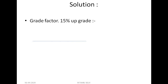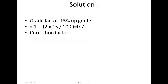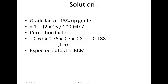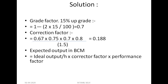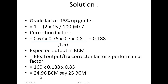Solution: First, calculate the grade factor. Then apply all correction factors: soil factor for hard digging = 0.675, blade factor = 0.75, transmission factor = 0.80, grade factor (calculated), and divide by swell factor = 1.5. This gives a combined correction factor of 0.8 approximately. The ideal output is 160.